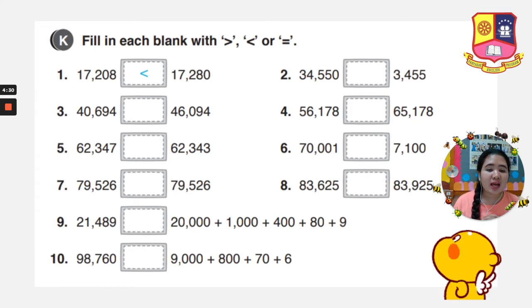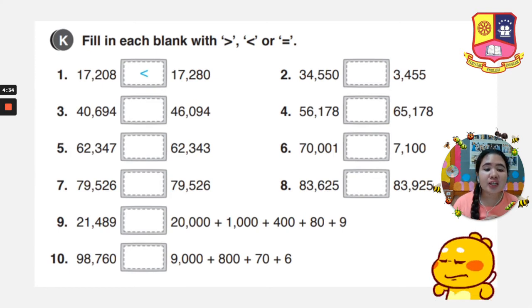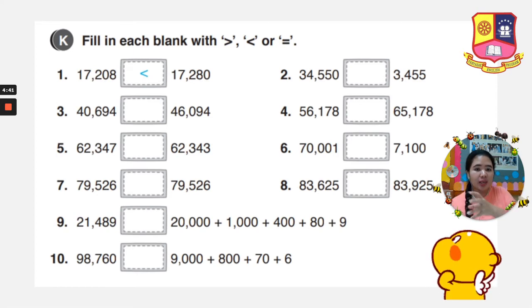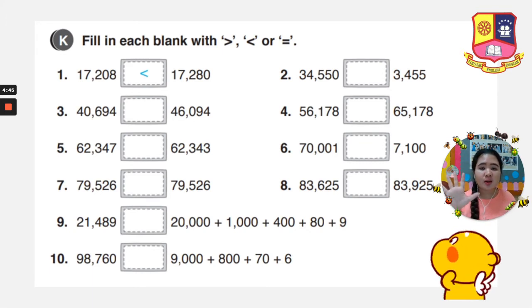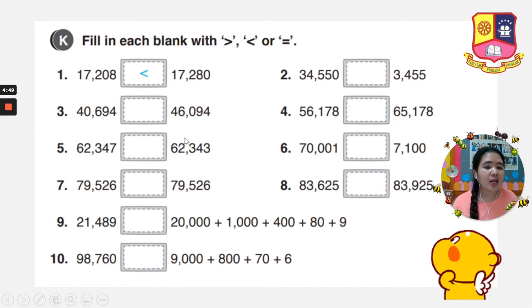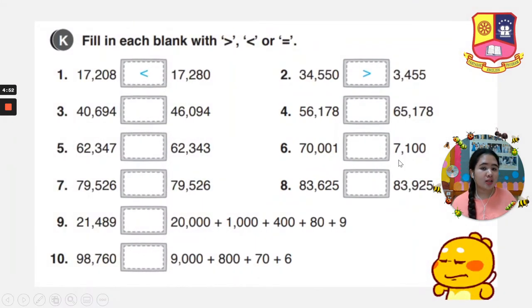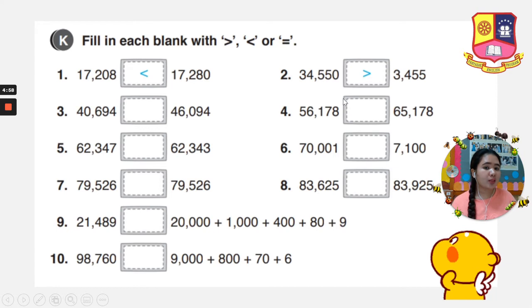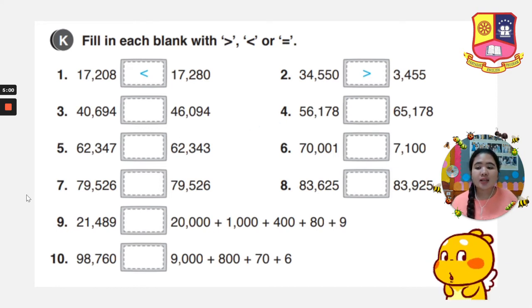Let's go to number 2. We have 34,550 and 3,455. When you compare, count first the number of digits. We have 5 digits and 4 digits, so we know that a 5-digit number is bigger than a 4-digit number. The mouth is always at the big number.